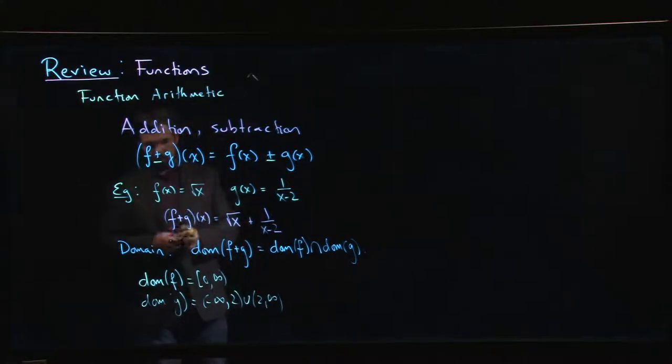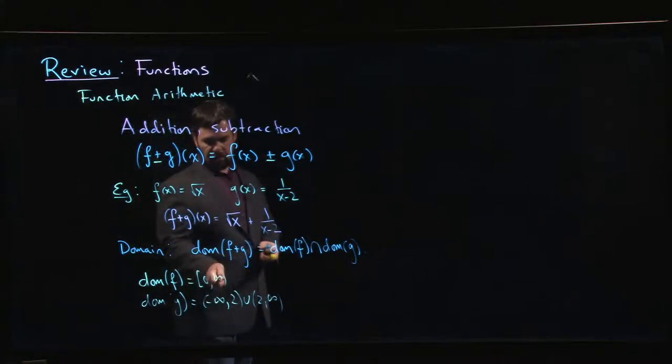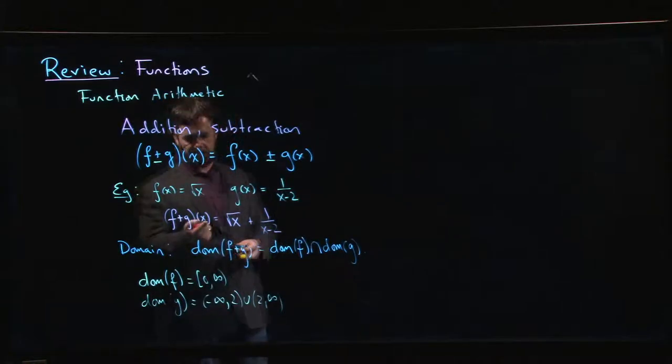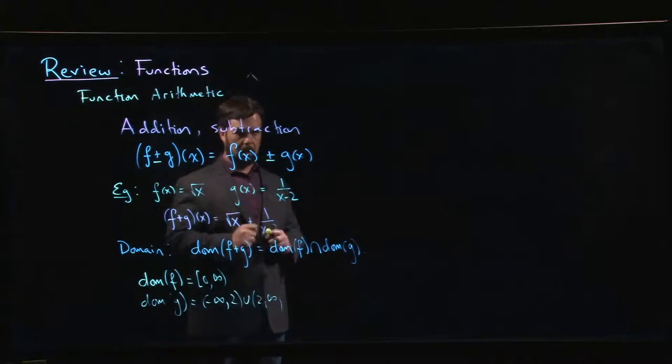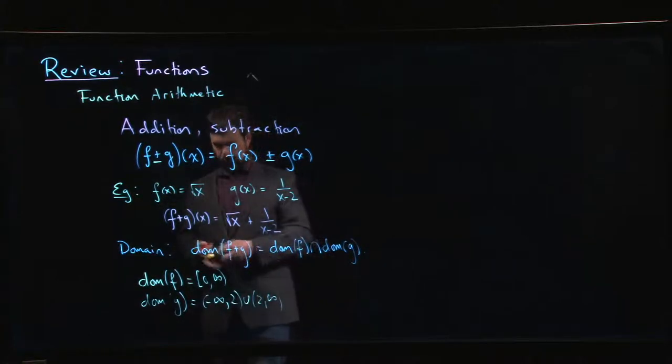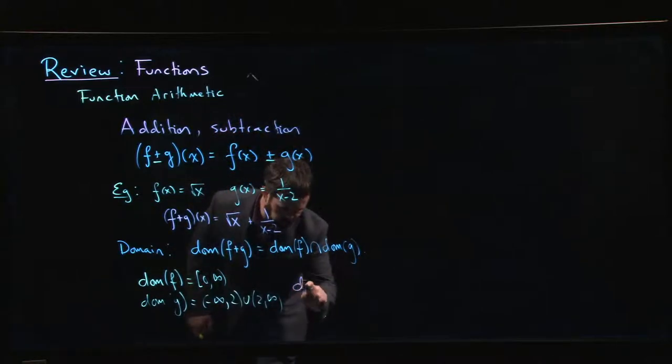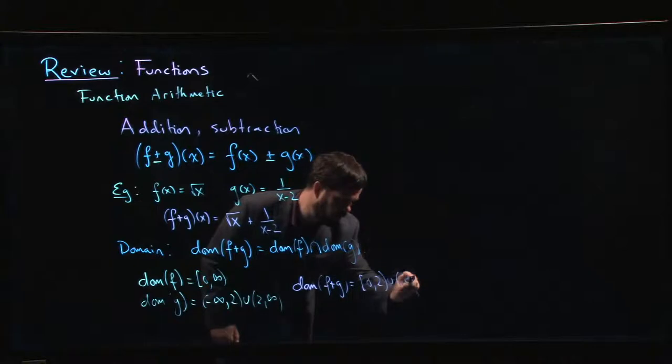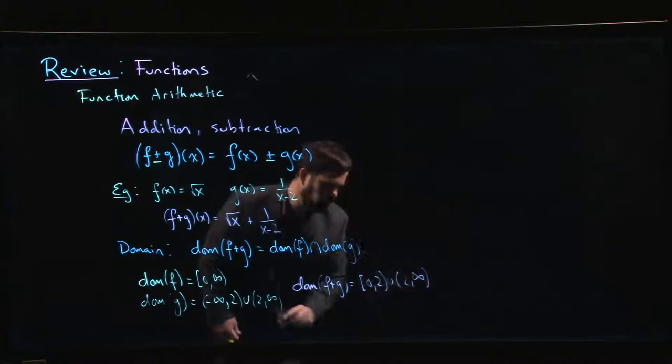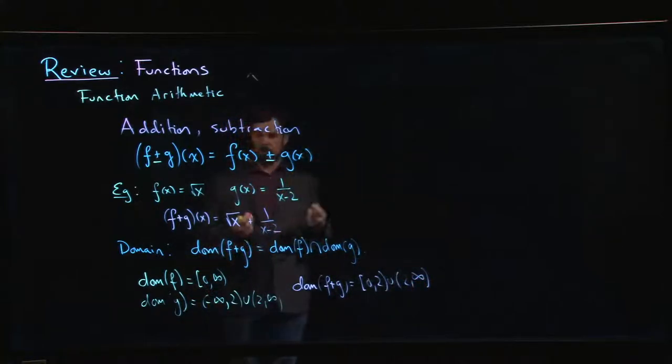So if we intersect those two domains, what happens is we basically have to remove 2 from the domain of f. So f plus g is going to be defined if x is bigger than or equal to 0 but not equal to 2. So the domain for f plus g will be from 0 to 2 and from 2 to infinity. So that's simple enough.